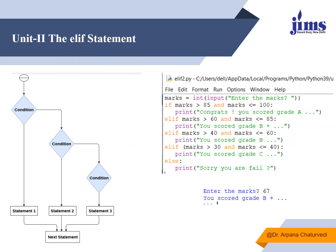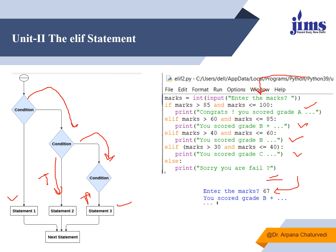The flowchart for `elif` shows that if condition one is true it executes the first set of statements; otherwise it falls down to the next condition. If that is true it executes the next set of actions; otherwise it falls to another condition. This is also known as a ladder `if`. In this example, I accepted marks from the user — if marks are 85 to 100, grade is A; 60 to 85, grade is B+; 40 to 60, grade is B; less than 30, you failed. I entered 67 and the output was 'grade is B+'.